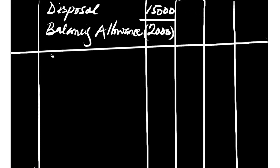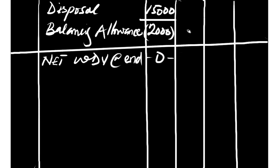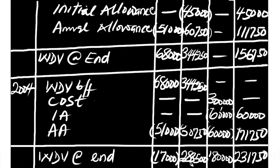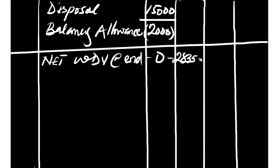Plant is disposed of and will no longer appear in the account. We record the net WDV at end of 2004: plant = nil (disposed), motor vehicle = 283,500, equipment = 180,000. Total capital allowance for 2004 = 231,750. We close the 2004 account and proceed to 2005.